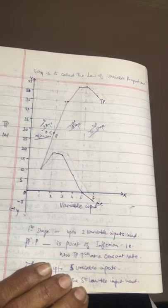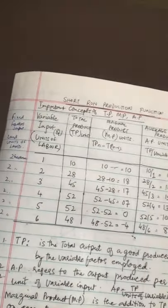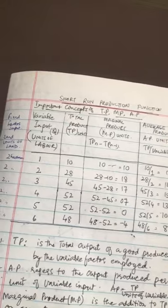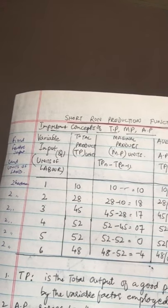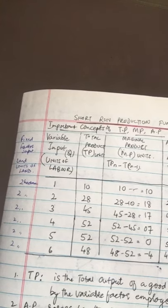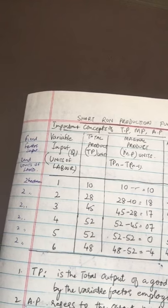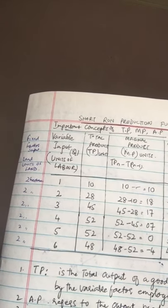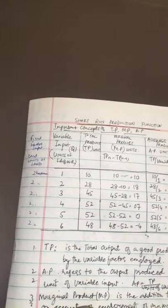Let's go back to what we did in the previous class. We differentiated between the long run production function and the short run production function. In the short run production function, the factor ratio changes — it tends to change with a change in the volume of output.